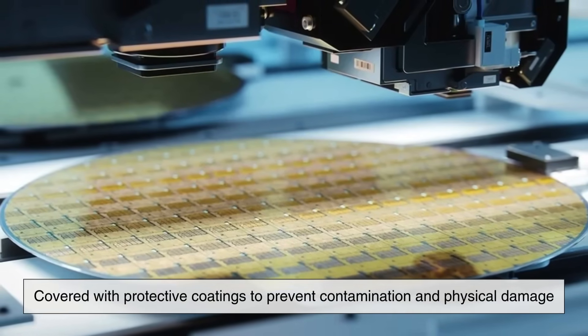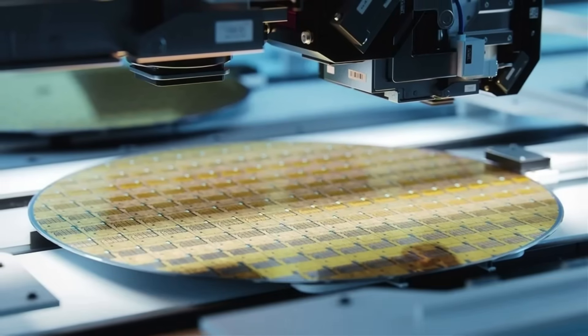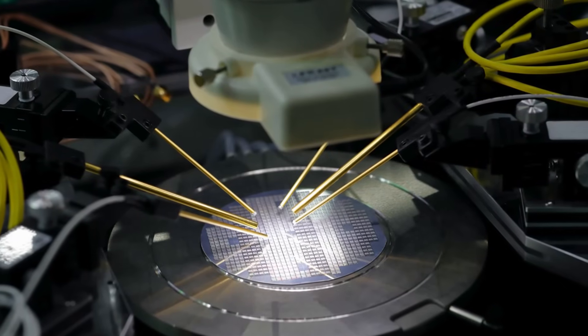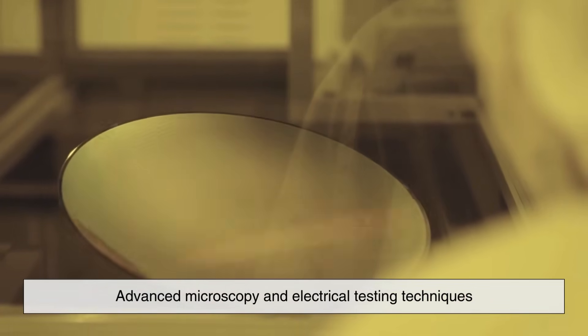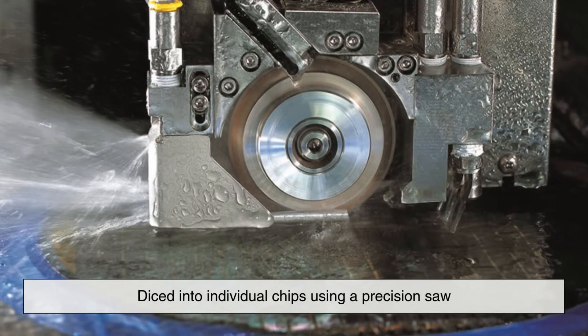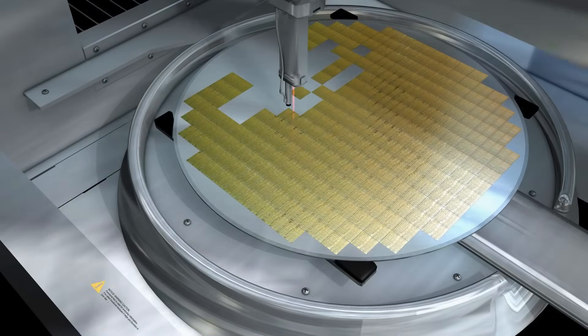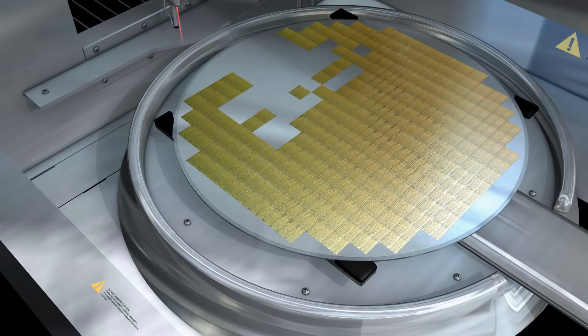The final layers of the chip are covered with protective coatings to prevent contamination and physical damage. Once the wafer is fully processed, it undergoes an extensive testing and quality control phase. Automated systems inspect the wafer for defects using advanced microscopy and electrical testing techniques. If the wafer meets quality standards, it is diced into individual chips using a precision saw. These individual chips, also called dies, are then packaged to protect them and facilitate their integration into electronic devices.